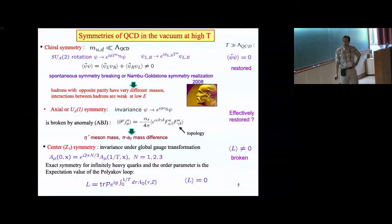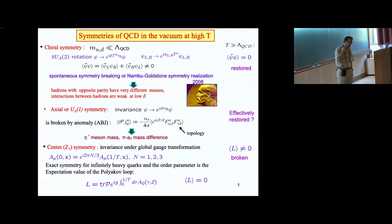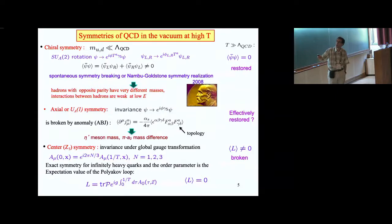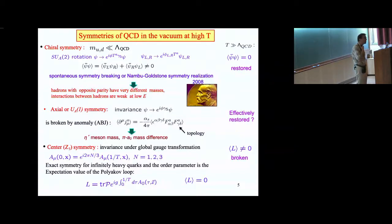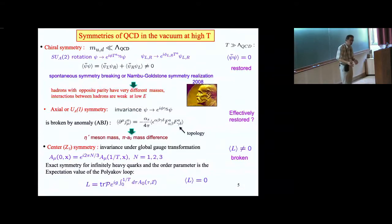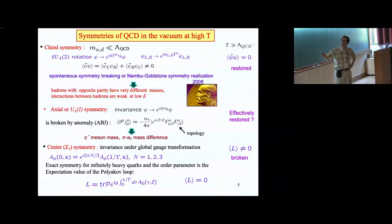An important physical consequence of this symmetry breaking is that hadrons of different parity have very different masses. If chiral symmetry were exact, hadrons with different parities would have similar masses, but that's not realized in nature. Another important consequence — particularly for QCD at non-zero temperature — is that hadrons at low energies interact weakly. Although QCD in the low energy regime is strongly coupled in terms of quarks and gluon degrees of freedom, the Goldstone bosons are very weakly interacting at low energy. So pions essentially form a weakly interacting gas.